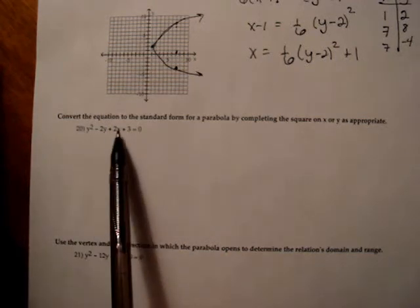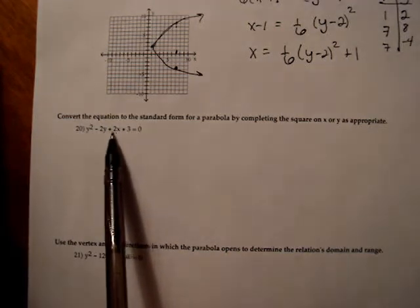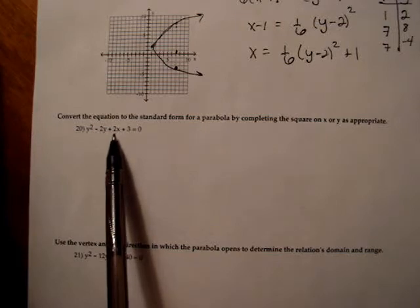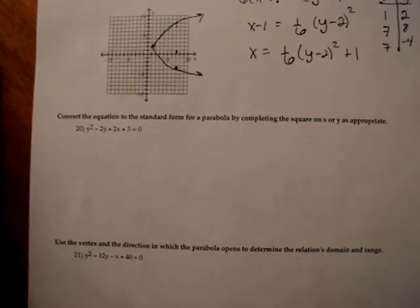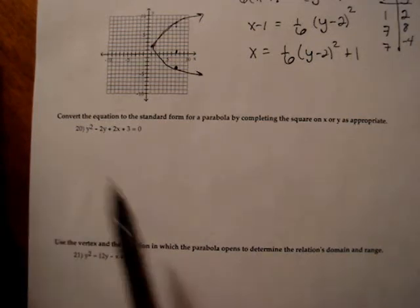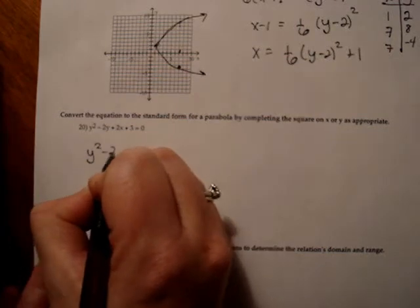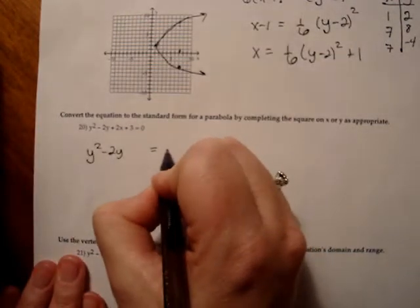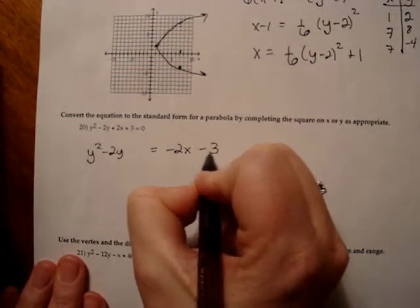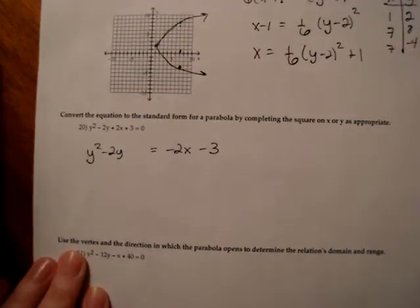Also, since what I see is no x squared term, just a plain x, I know I'm going to complete the square on the y portion. So we're going to start by rewriting my terms. I will have y squared minus 2y is equal to negative 2x minus 3. So I move the x term and the constant term to the other side of the equation.